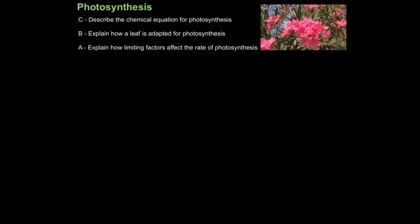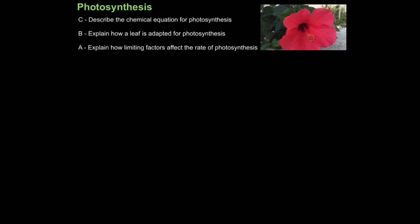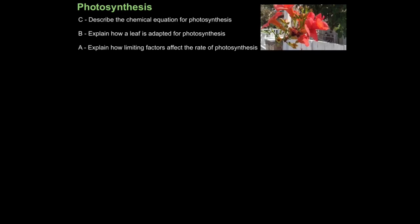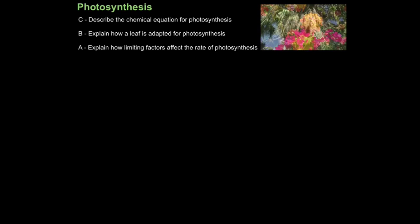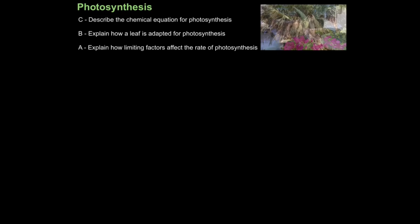In this tutorial we'll look at photosynthesis. The first aim is to describe the chemical equation for photosynthesis, then explain how a leaf is adapted for photosynthesis, and finally explain how limiting factors affect the rate of photosynthesis.